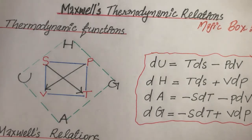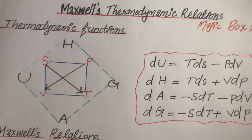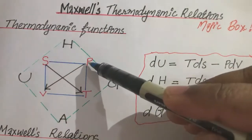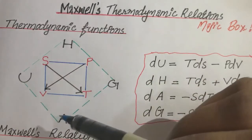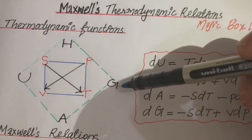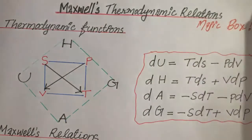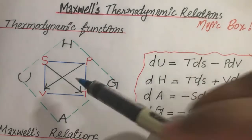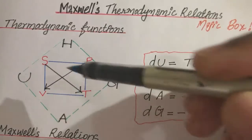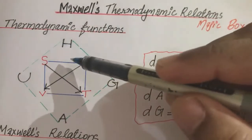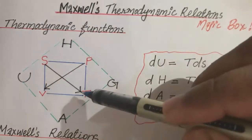Here we are discussing a magic box. First, we are creating this. Here we know that S is entropy, P is pressure, T is temperature, V is volume. U is internal energy, H is enthalpy, G is Gibbs free energy, A is Helmholtz free energy. Now first we are making a small box. These are the state variables: S, P, V, T.